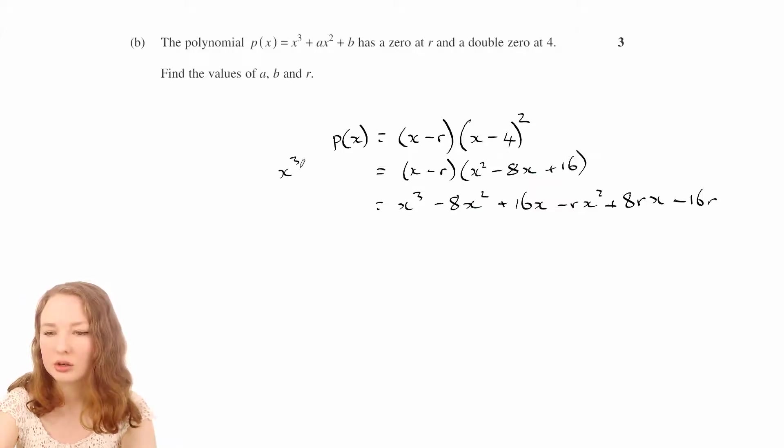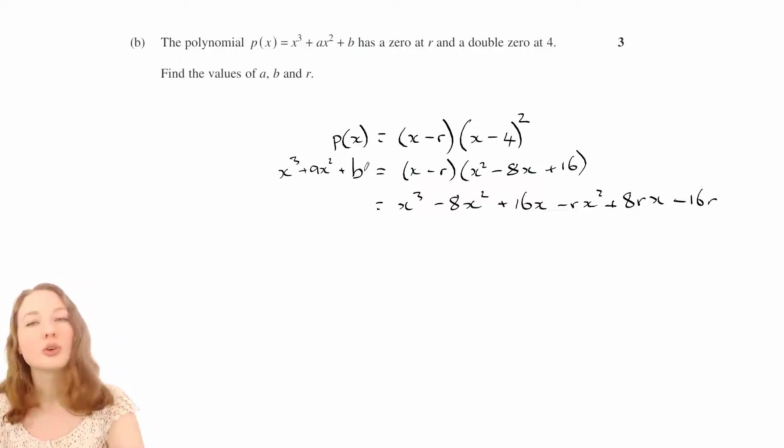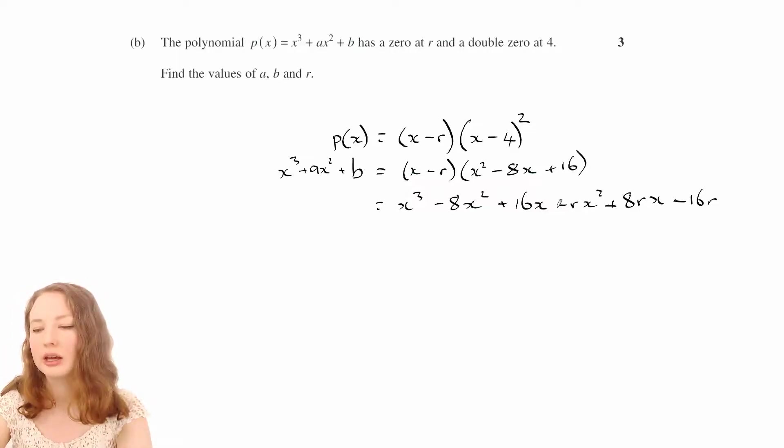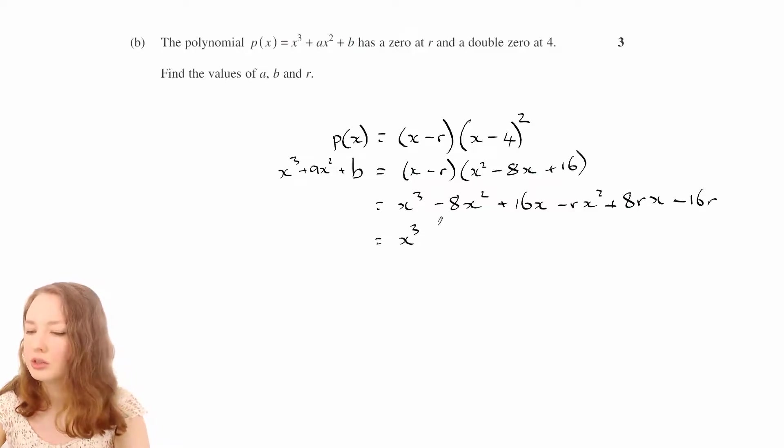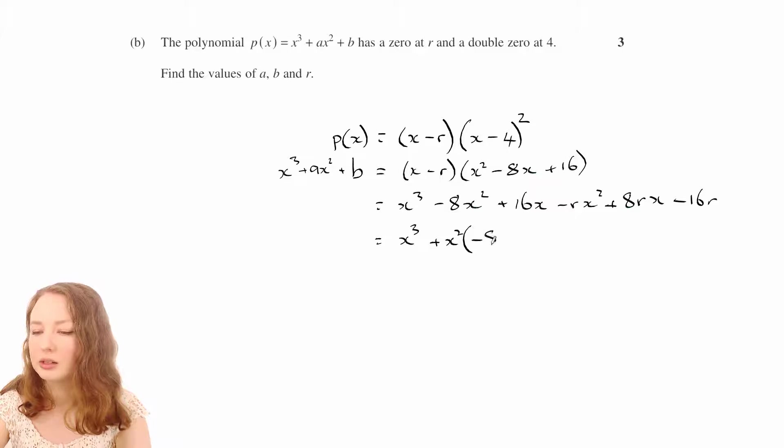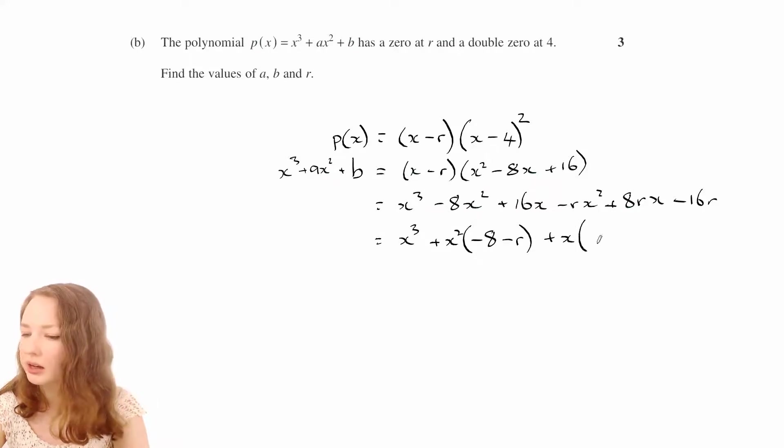So what I might do is collect the x squared ones together, and the x's together as well. So we've got x cubed, and we've got x squared times minus 8 and minus r, and then x times 16 and 8r.